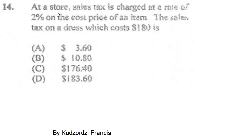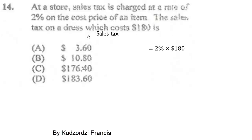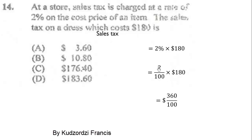We are on number 14. At a store, sales tax is charged at a rate of 2% on the cost price of an item. The sales tax on a dress which costs $180 is - we are calculating the tax only. So 2% of 180 gives us the sales tax, which is 2 over 100 times 180. Multiplying gives 360 over 100, which equals $3.60. The correct answer is A.